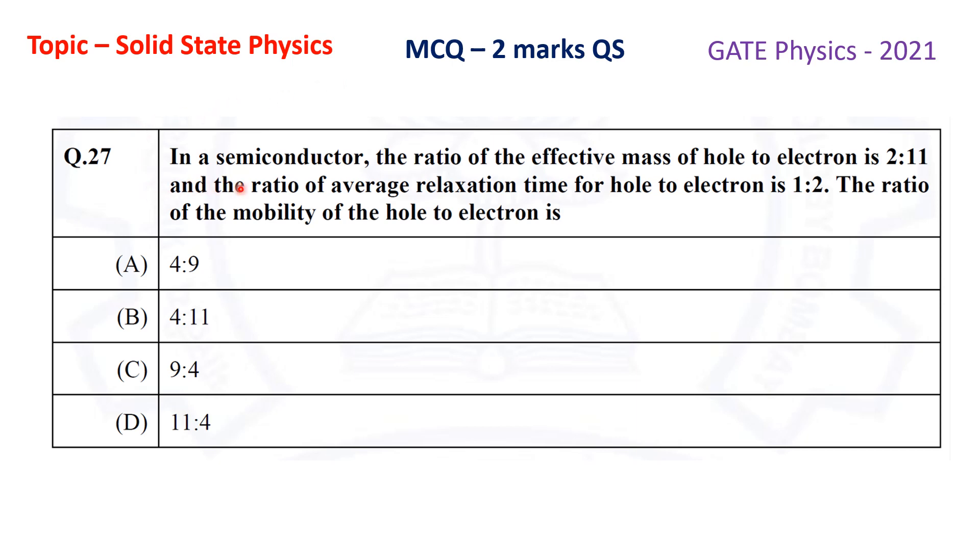In a semiconductor, the ratio of the effective mass of hole to electron is 2:11 and the ratio of average relaxation time for hole to electron is 1:2. The ratio of the mobility of the hole to electron is: (A) 4:9, (B) 4:11, (C) 9:4, and (D) 11:4.